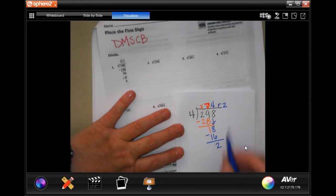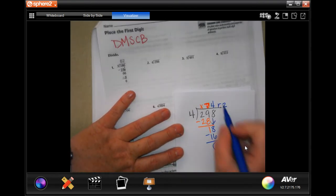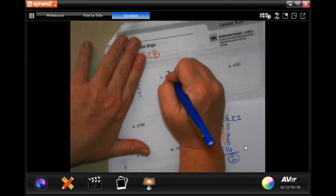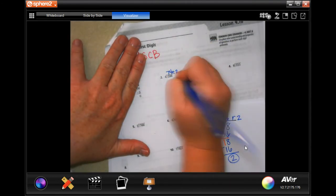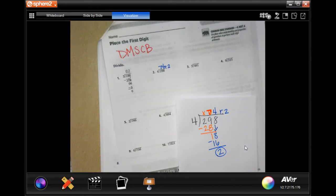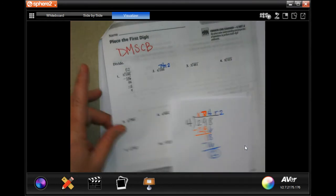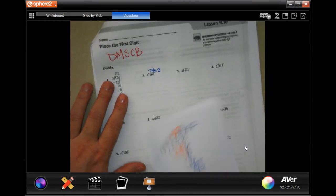So 74 remainder 2. Whatever is left down here, that's your remainder. So 74 remainder 2. Make sure you show your work, guys. I'm using markers. They're a little bit thicker, so I'm doing it on scrap paper.